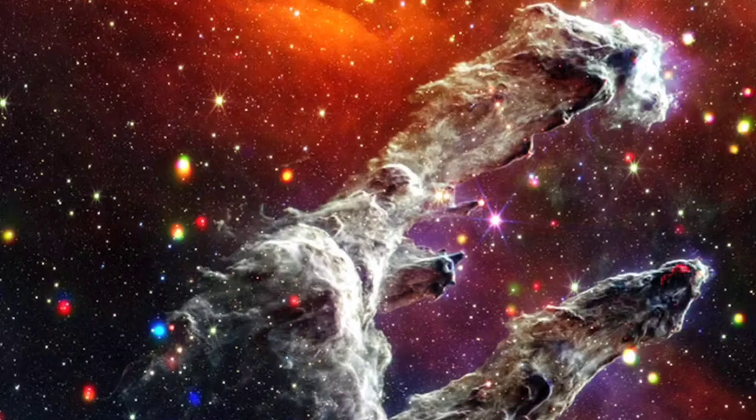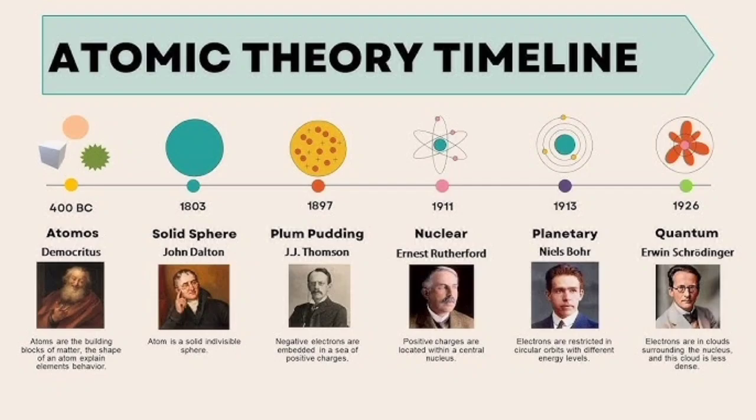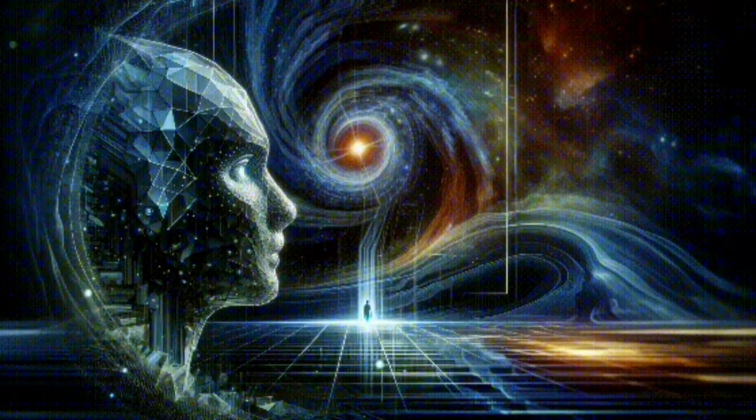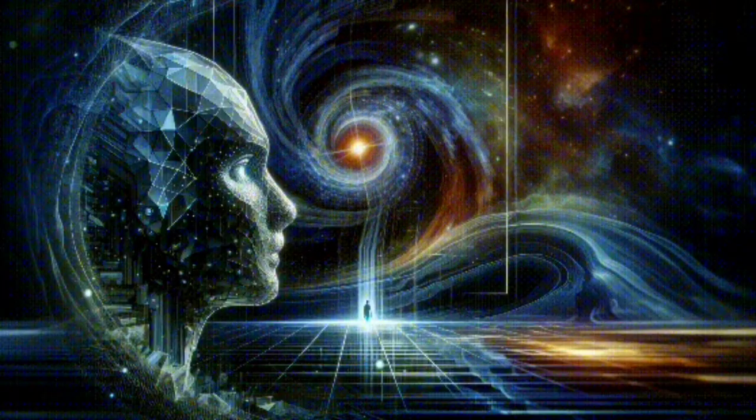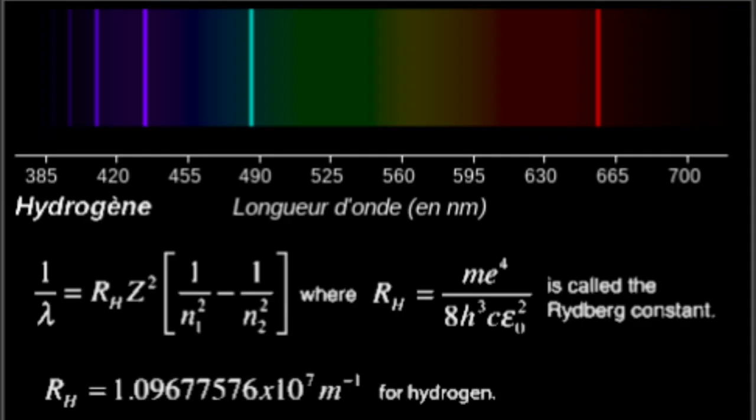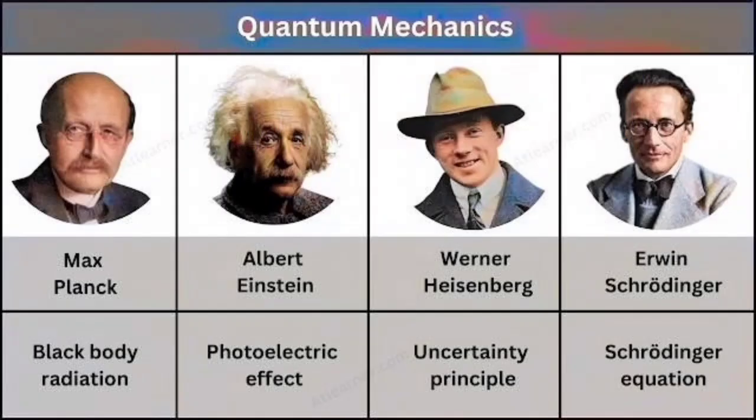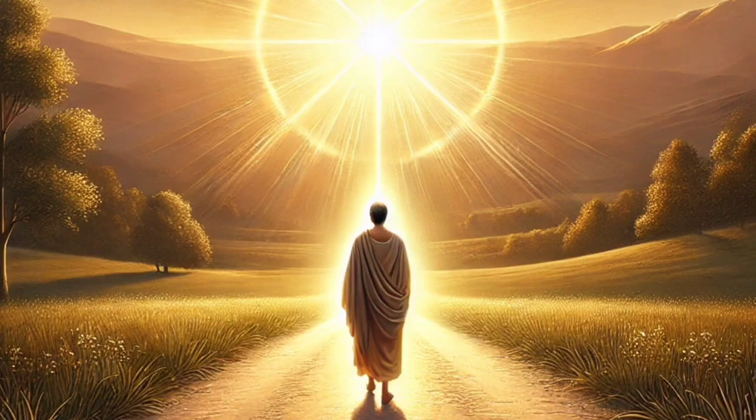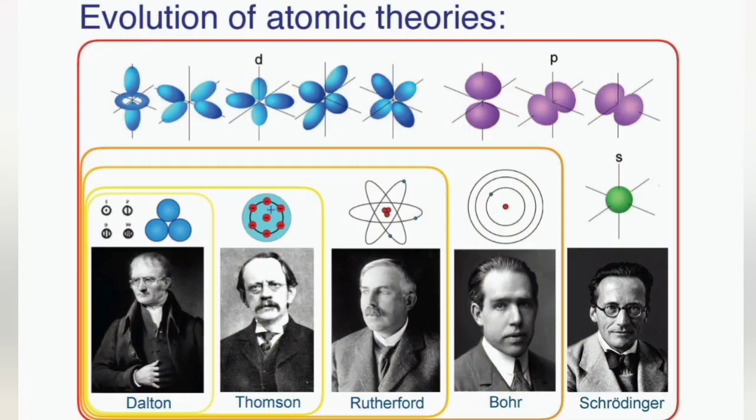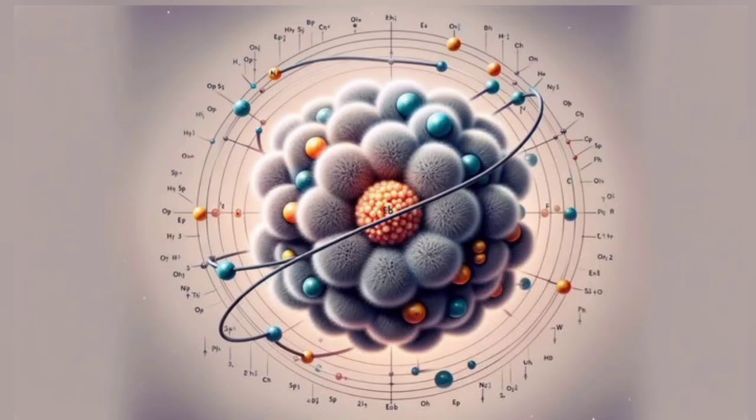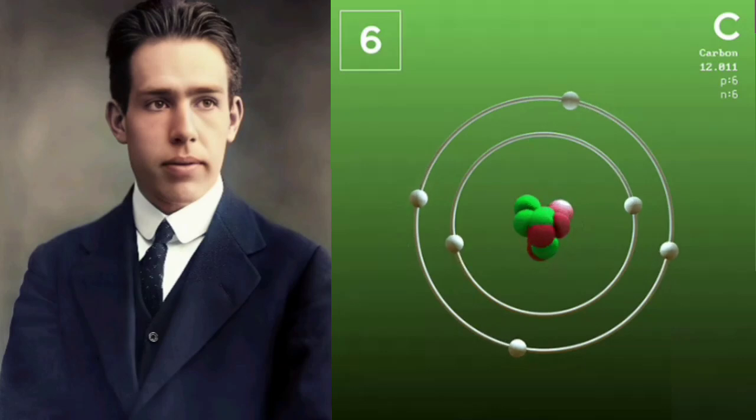This discrepancy baffled scientists for years and led to a complete paradigm shift in our understanding of the atom. The breakthrough started with the realization that energy isn't continuous but comes in discrete packets called quanta. This led to the development of quantum mechanics, which fundamentally changed our understanding of how energy and matter behave at the subatomic level.